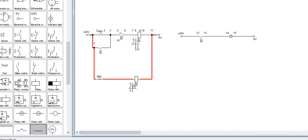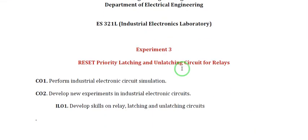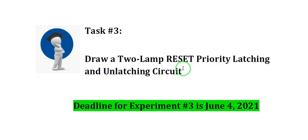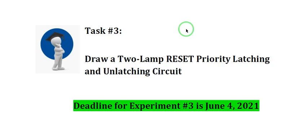For your task, you will draw a two-lamp Reset Priority Latching and Unlatching Circuit. This is similar to Task 2 for Experiment 2, where you were asked to draw a two-lamp Set Priority Latching and Unlatching Circuit. For this task, you will do a two-lamp Reset Priority Latching Circuit. The deadline is on or before June 4, 2020. Thank you and good day.